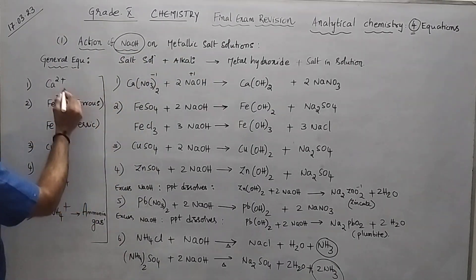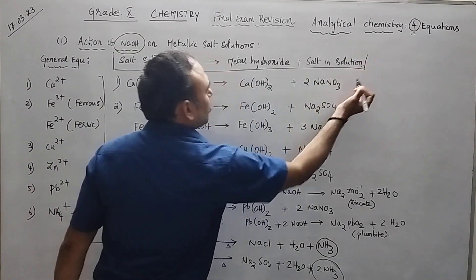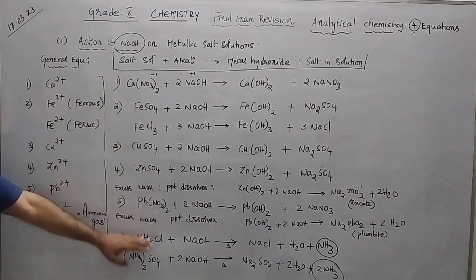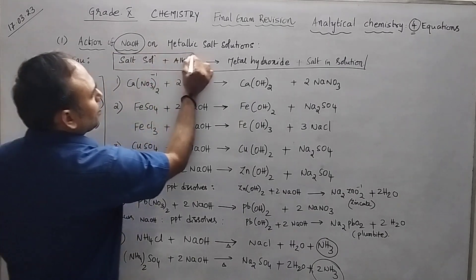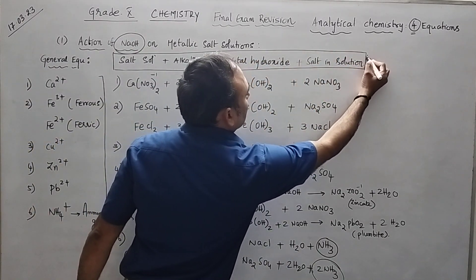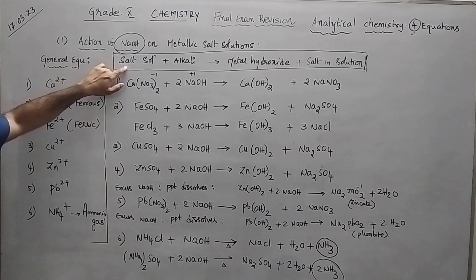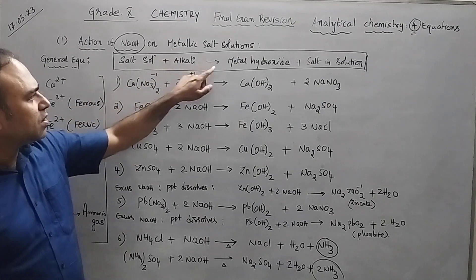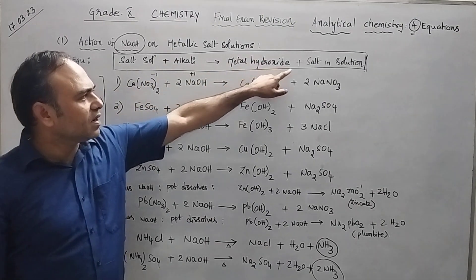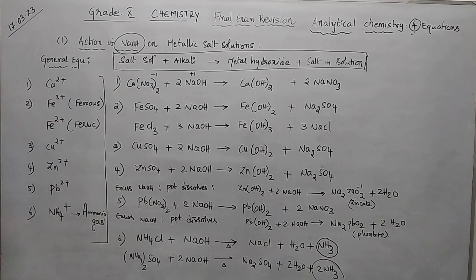For the general equation, there is a very important thing: don't just memorize these equations. I'll tell you how to approach them. First and foremost, write down your general equation. Take any salt solution with NaOH — you will get a metallic hydroxide and a particular salt. This is your general equation.